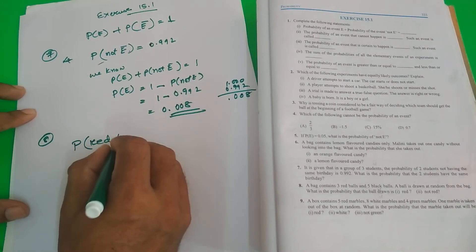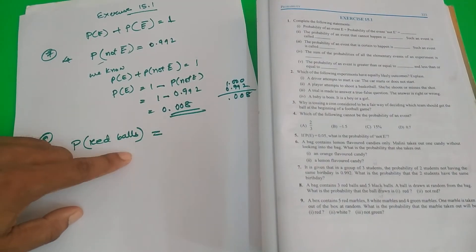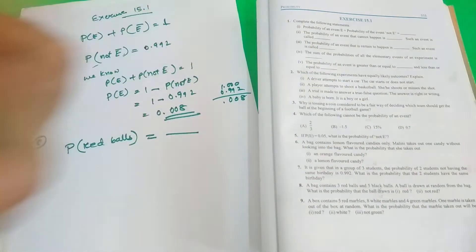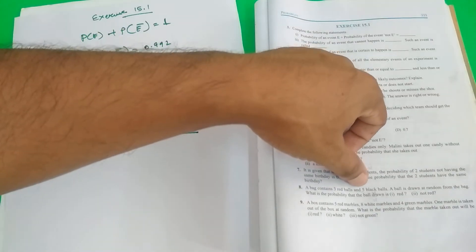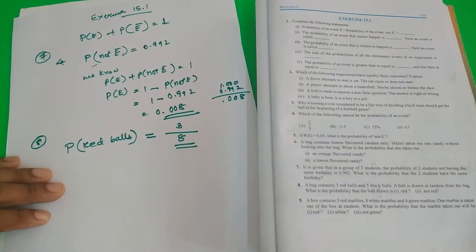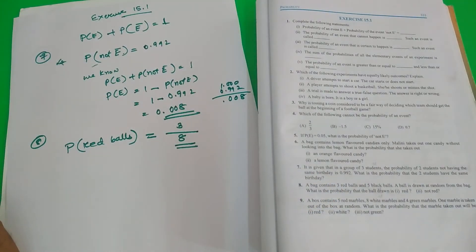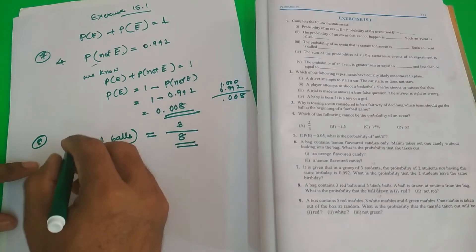Probability of getting red balls. P is probability. Probability of getting a red ball is how much? 3 red balls. Total outcome how many? Total balls how many? 3 plus 5. That is 3 by 8. Simple thing. Red ball is 3. But the total balls in the bag is black ball and red ball. That is 3 plus 5 is 8. That is 3 by 8.